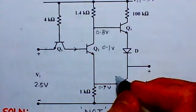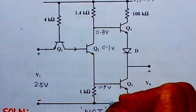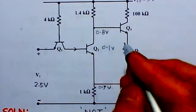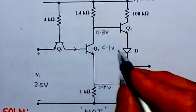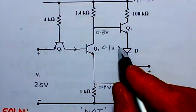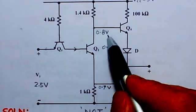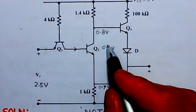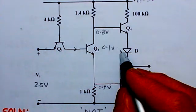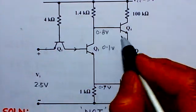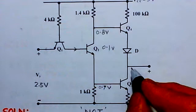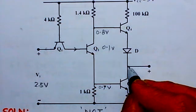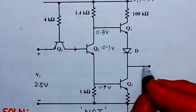Since Q2 is in saturation, the collector-emitter voltage will be about 0.1 volts. With Q3 base-emitter voltage of 0.7V and Q2 collector-emitter of 0.1V, this gives 0.8 volts at the collector of Q2. Since Q3 is saturated, its output will be about 0.1 volt, nearly 0 volts.